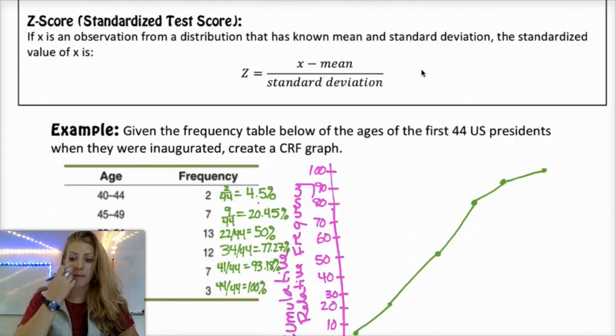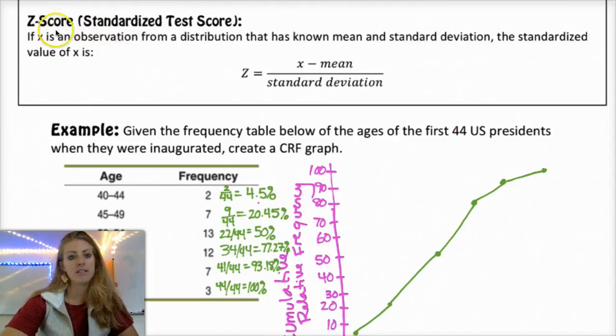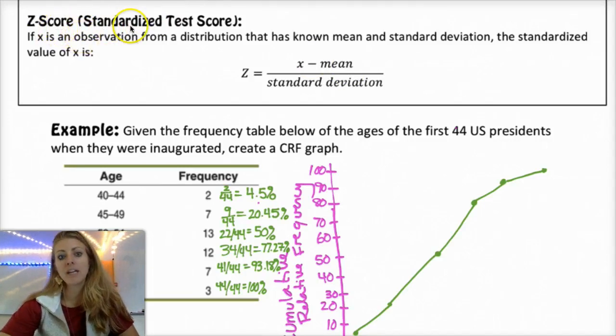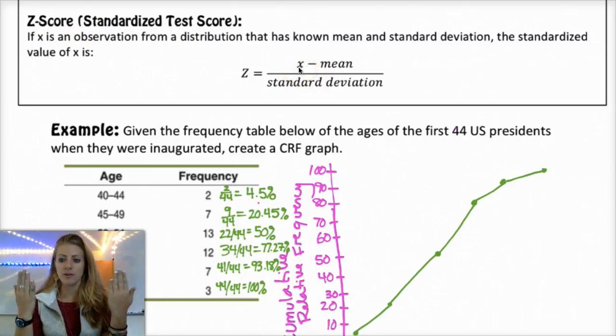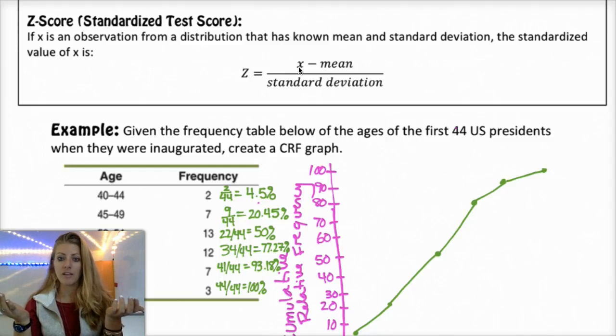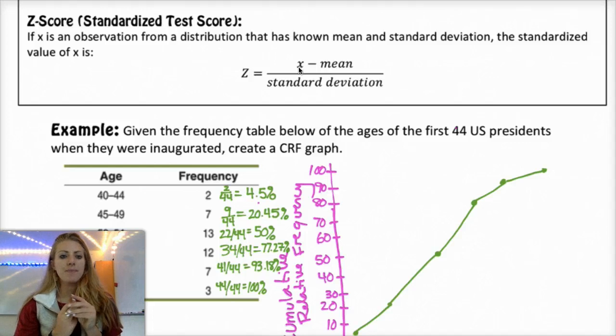So another way to compare data is using something called the standardized test score. We're going to be calling it the Z score pretty much from here on out. But you should also understand that it is a standardized score. Basically what it does is if you have two different test scores and you want to compare them and see how you did on each one compared to the rest of the people who took the test, you would want to look at your standardized test score because those tests might be out of different totals.